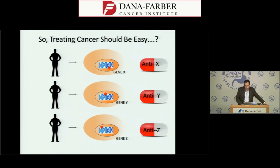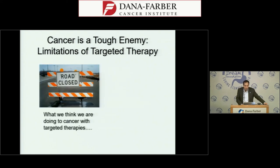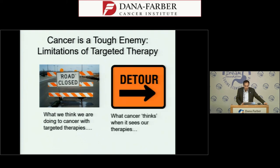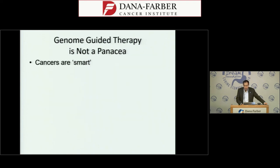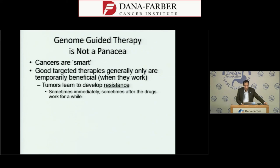While it might seem simple — if gene X is mutated, give anti-X drug — cancer is unfortunately a hard problem. Even when we have the right drug for the right patient, the tumor often finds a way around it. Even effective targeted therapies generally work temporarily before tumors develop resistance. We have to continually think about how to make therapies better, which requires extensive laboratory work to bring the best ideas forward.